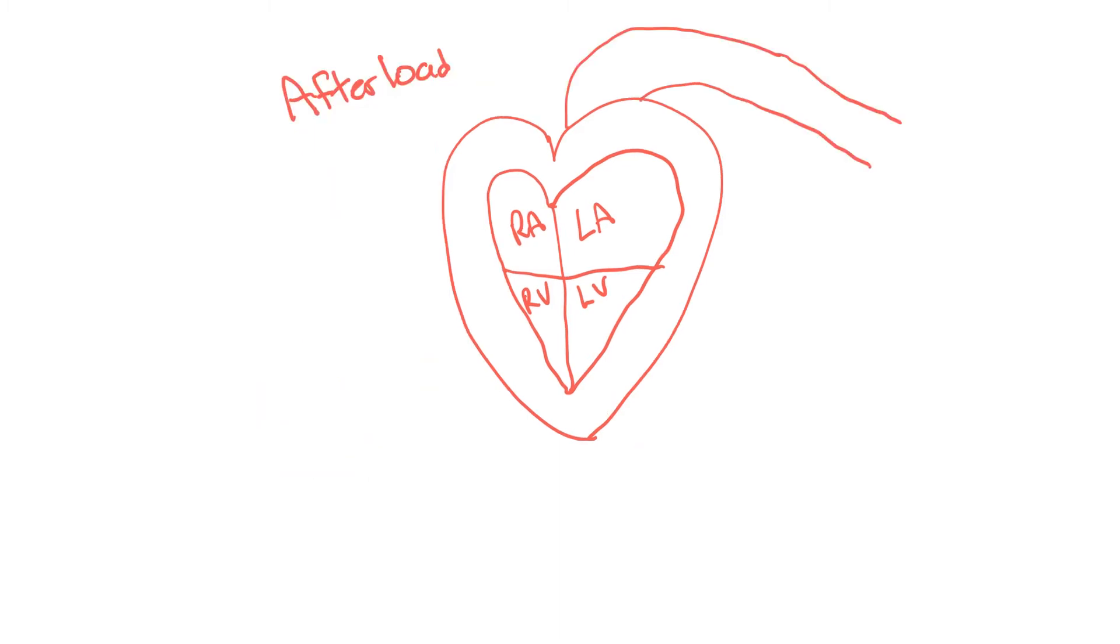The third factor is the afterload, and this is the resistance that the blood or the heart needs to pump against. So in a typical younger person, the artery is pretty open, the blood is pretty viscous, it's not very thick, and it can move pretty easily. But as we age, our blood vessels become thicker and less elastic.